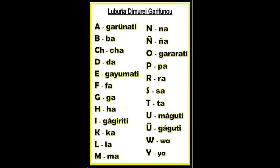B is Ba. The letter C, which we normally pronounce as C-H, which is Cha. The letter D is Da. E is Gayumati. F is Fa. G is Ga. H is Ha.